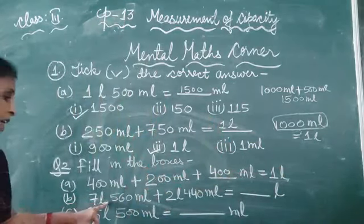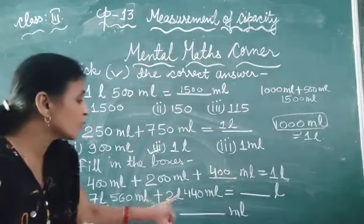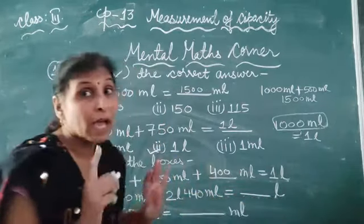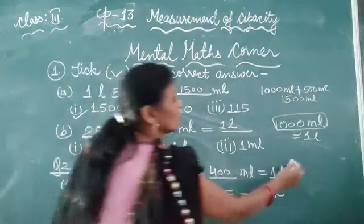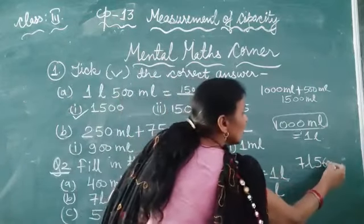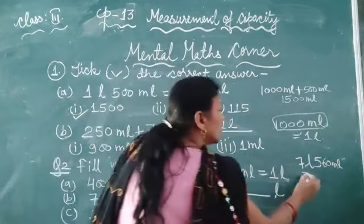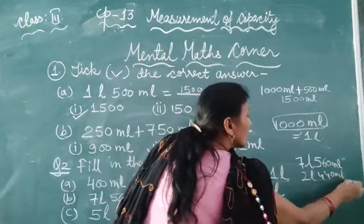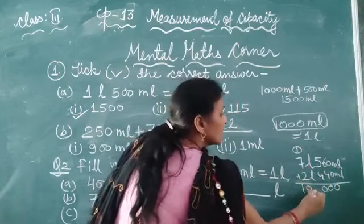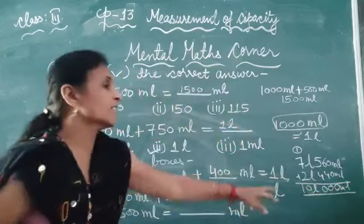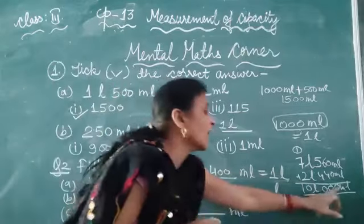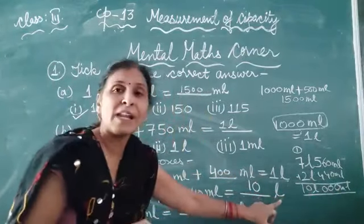Part B: 7 litre 560 millilitre plus 2 litre 440 millilitre equals dash litres. The answer is 10 litre. The millilitre part totals 1000 millilitre, which has no remaining millilitre value, so we write only 10 litre.